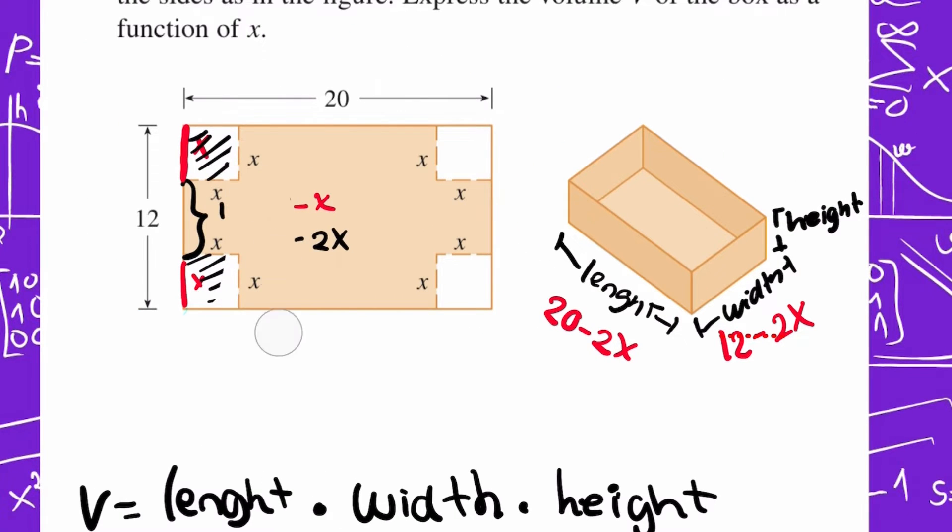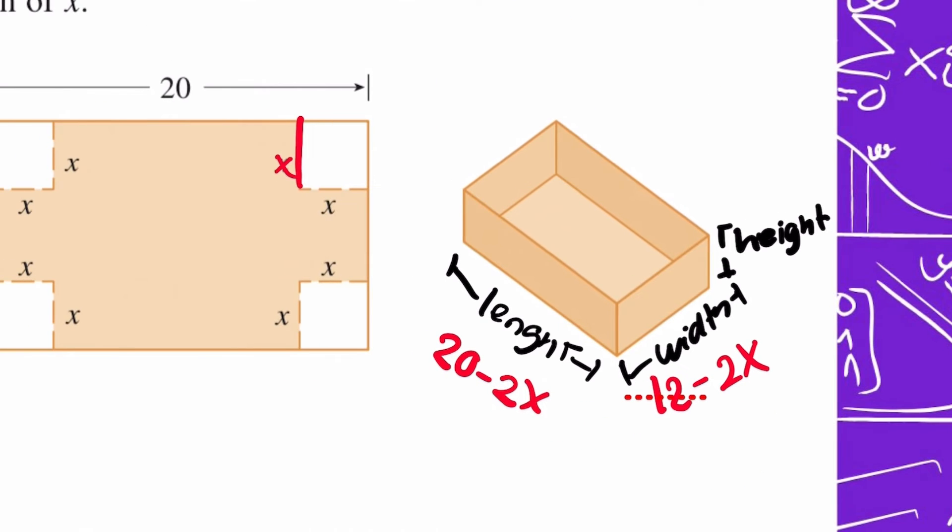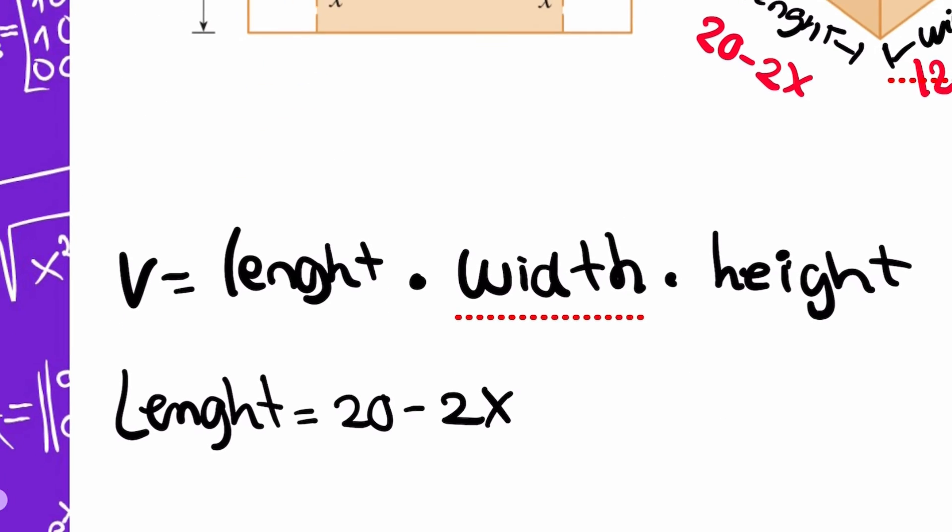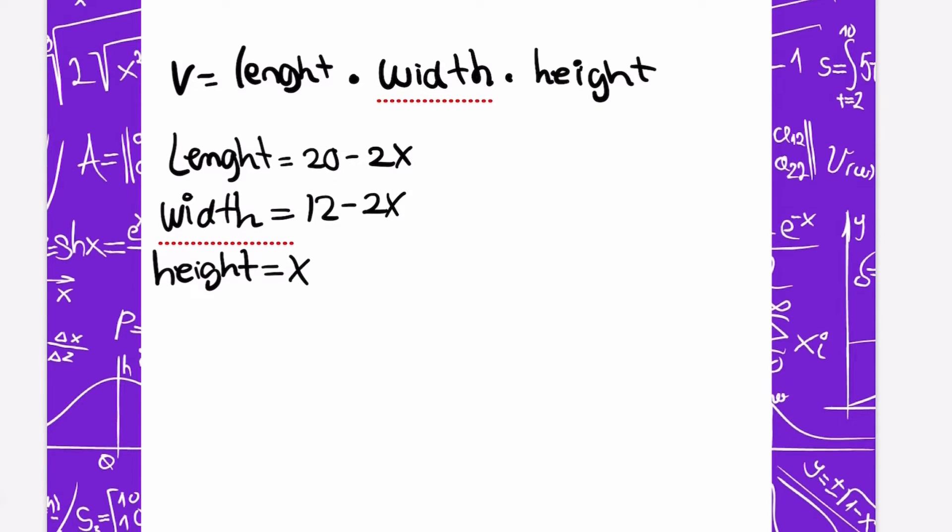Now I need the height. In the picture we can see that the height is really small. So if you see, this is the height, or this is x. Basically it's always x. So I'm going to write: width is 12 minus 2x and height is x.